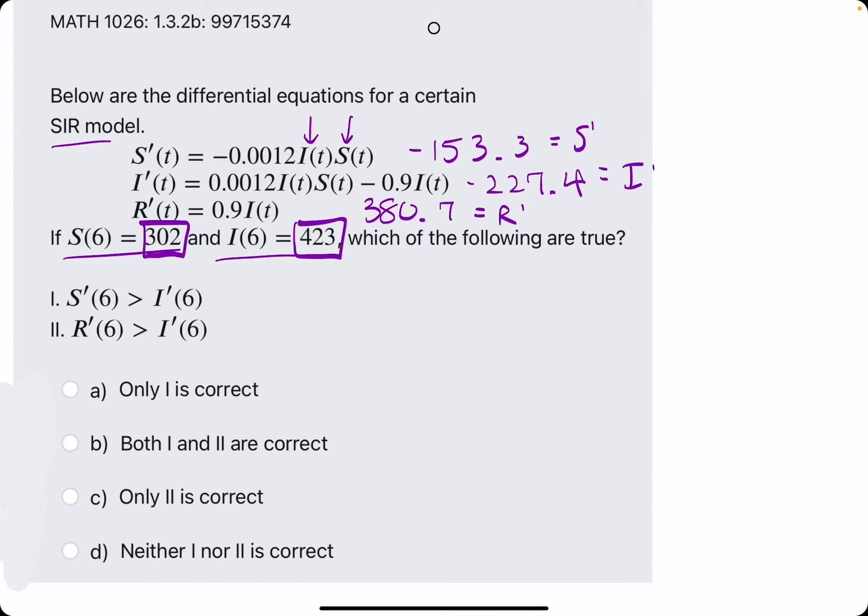And now we're just comparing the values that they tell us. So S prime, they say, is greater than I prime. So negative 153 is greater than negative 227. Is this true? Yeah, that's exactly right. So negative 153 is more towards the positive direction, more towards the positive part of the number line. Negative 227 is too deep into the negative. So this is a true statement.